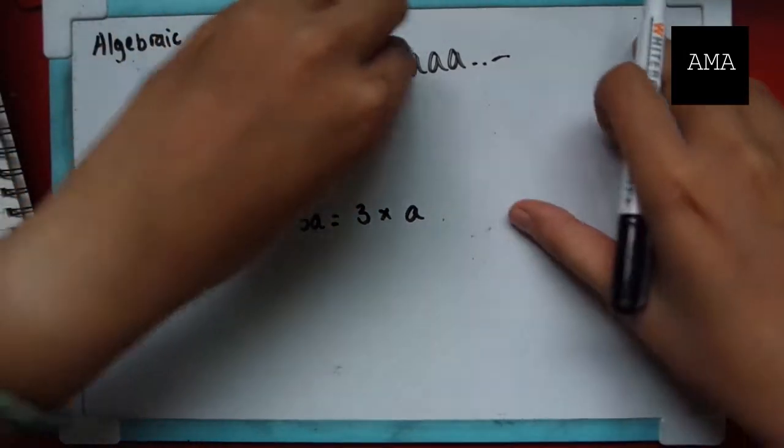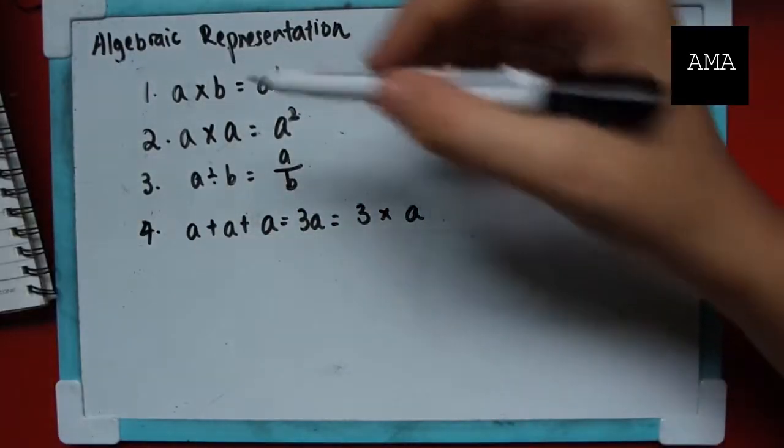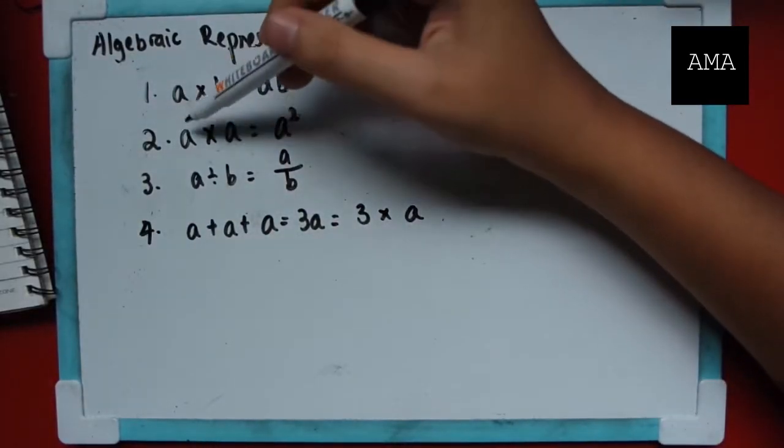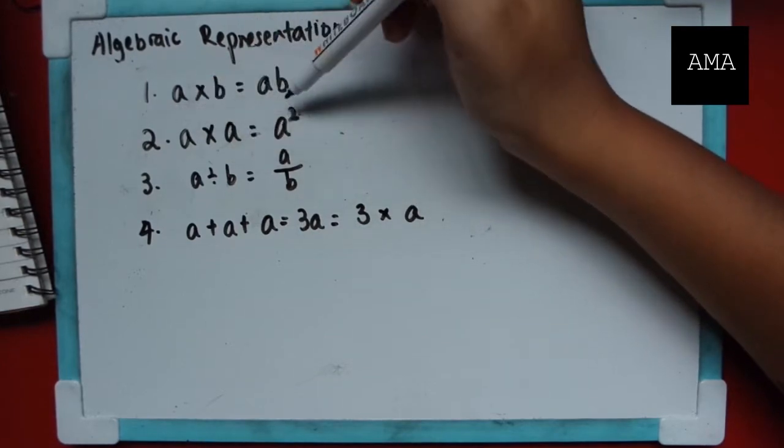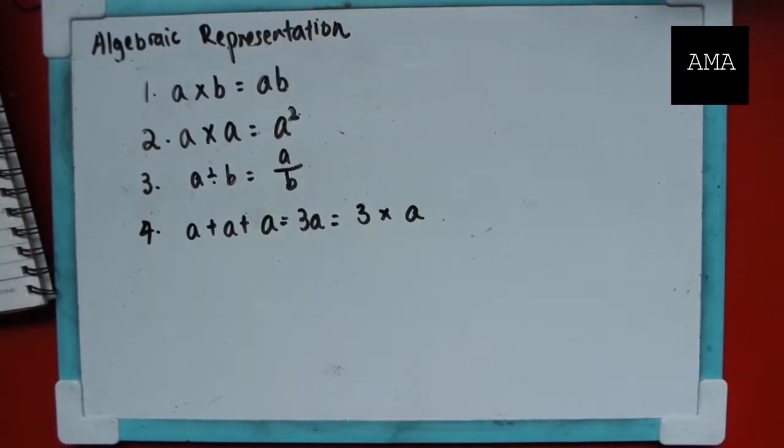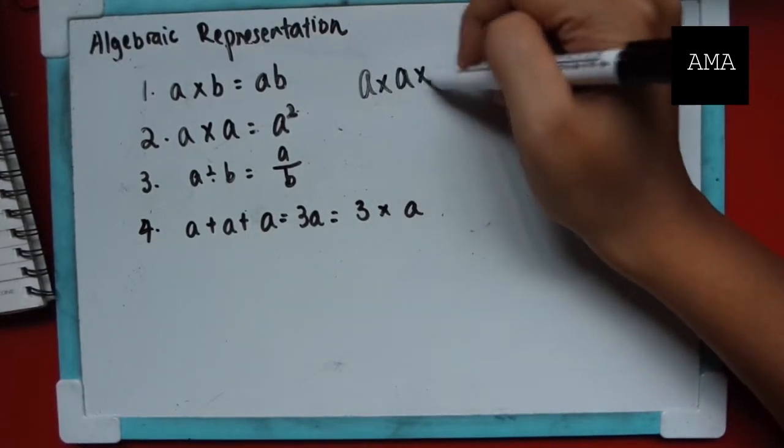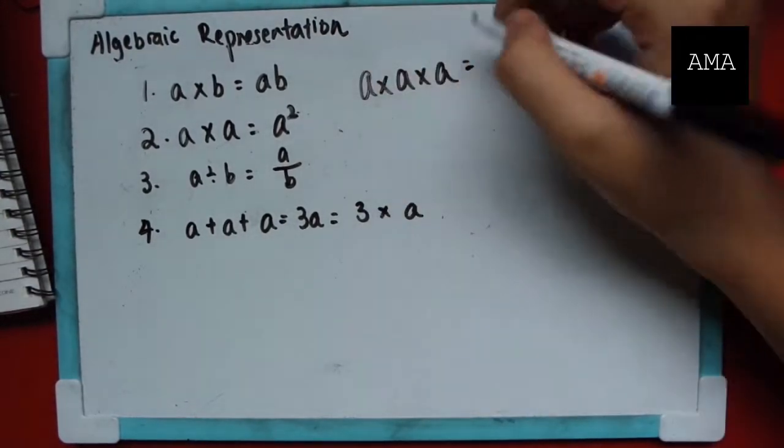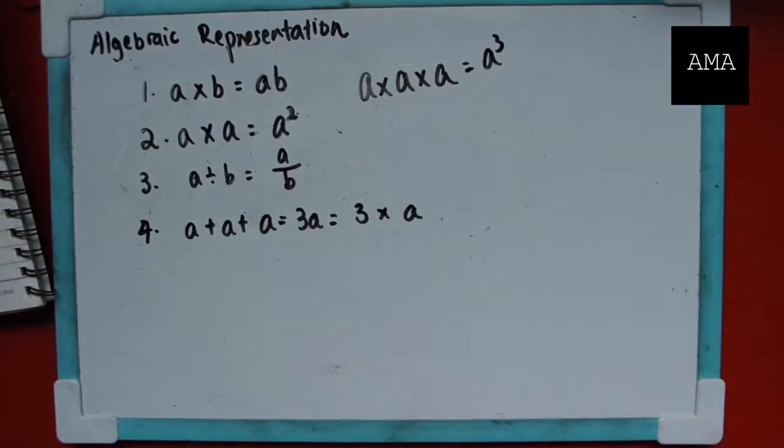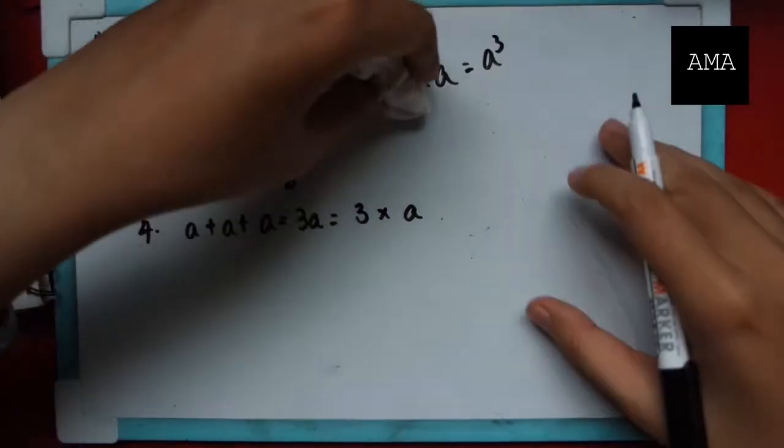Hundreds of these. So what we do is that there are two a's here, right? So we write two on the top right of the variable. For example, if I have three of these, a times a times a, instead of writing two, I would write three. So that is for the second point.